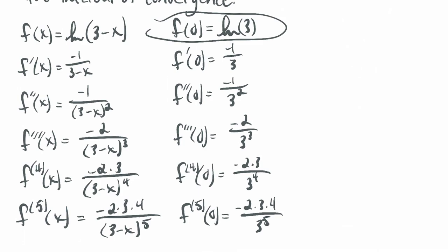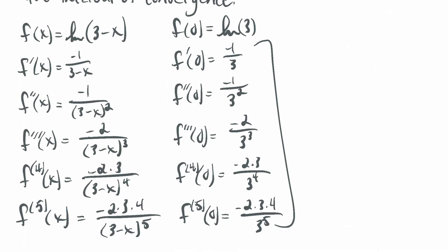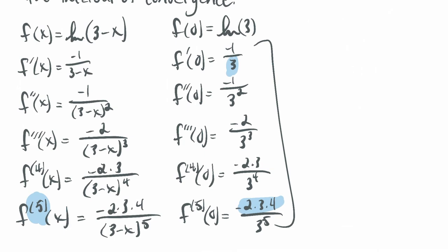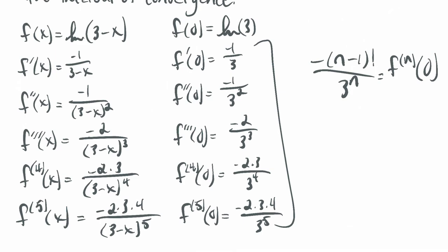The first coefficient is just ln of 3 — it doesn't fit the pattern. After that there's a clear pattern: the numerator is always negative and picks up new factors 2, 3, 4... while the denominator is just a power of 3. In the nth derivative, the bottom is 3 to the n, and the numerator has factorial up to n minus 1. So the nth derivative evaluated at 0 is negative (n minus 1) factorial over 3 to the n.